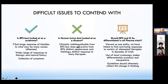Is BPS best looked at as a syndrome and end-stage response of the bladder to many possible causes or diseases? There's a wide range of responses to therapy and natural history — it's really a collection of symptoms. Is Hunter lesion best looked at as a disease clinically indistinguishable from BPS, but which does not evolve from BPS? It has a distinct appearance, histology, and a distinct response to many therapies. Should BPS and IC be differentiated in all pharmaceutical trials? Viewed as one entity, we have failed to find convincing responses to a variety of attempted therapies in decades of research. The use of local cystoscopy makes differentiation practical and inexpensive.